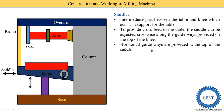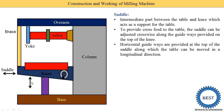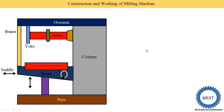Horizontal guideways are provided at the top of the saddle along which the table can be moved in a longitudinal direction. Considering three directions: on the saddle, guideways are provided in the Y direction in which the table moves. So the next part is the table.